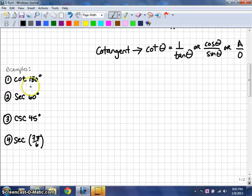The first example is cotangent of 180. Because cotangent refers back to cosine over sine, we're going to calculate the cosine of 180 over the sine of 180.